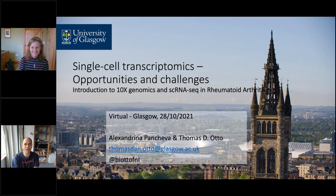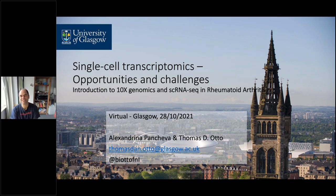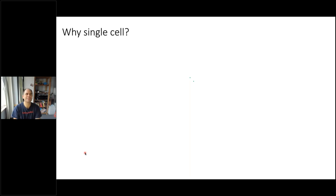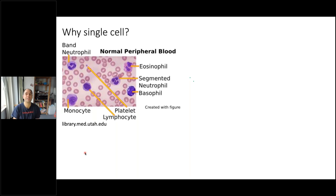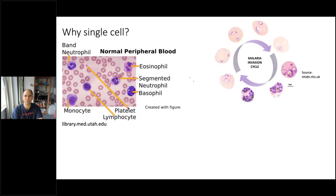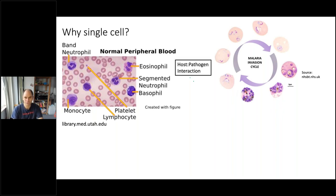Thanks Helen for the introduction and welcome everyone to our webinar on single cell opportunities and challenges. Today I'm going to speak about 10X Genomics and how we apply that to understand remission in rheumatoid arthritis. Why do we want single cell? If you think about blood, when you consider omics methods, you have everything together — the different cell types in PBMCs mixed together. Even if you cell-sort, you would never capture the different stages of potential development of different cells. Other approaches include parasite life cycles, where single cell allows you to capture specific time points, which is crucial for things like host-parasite interaction.